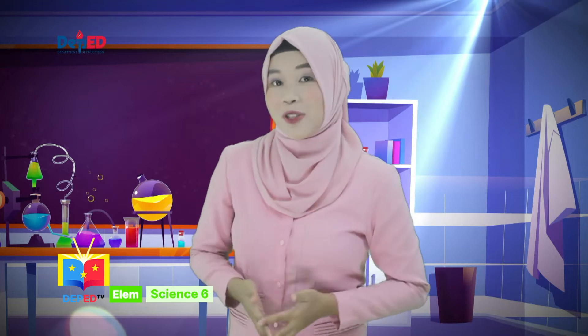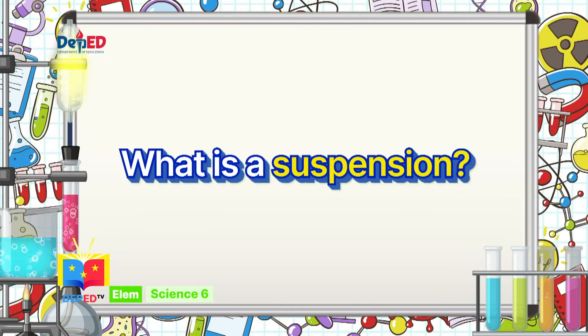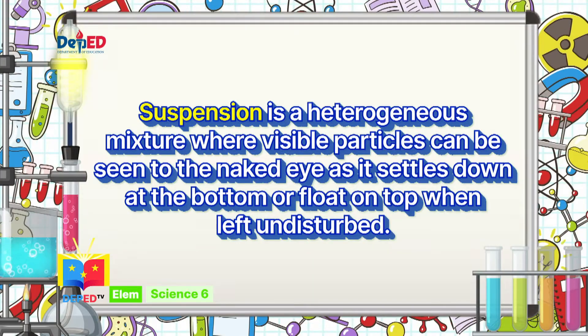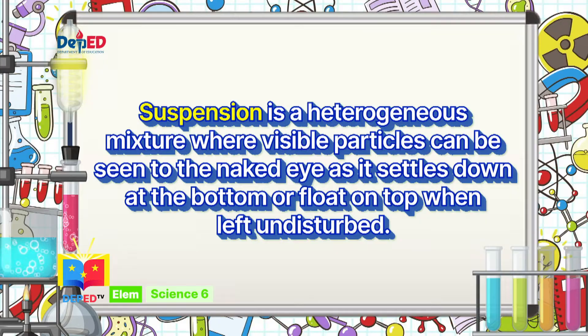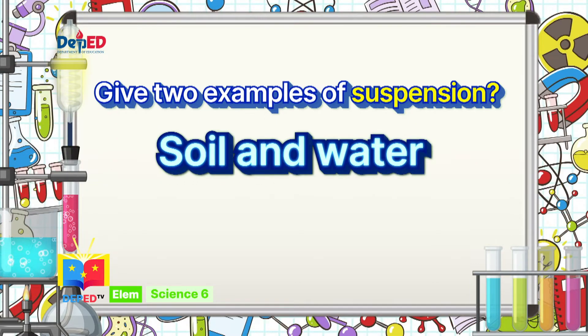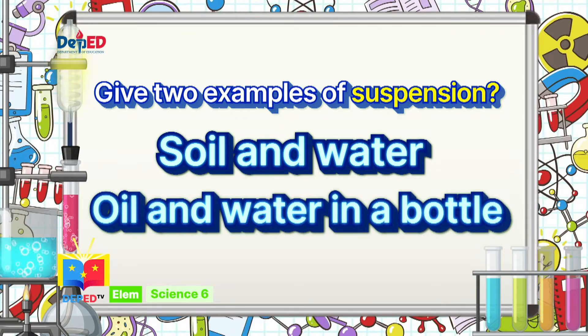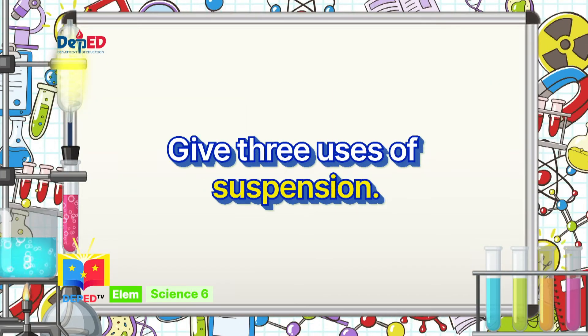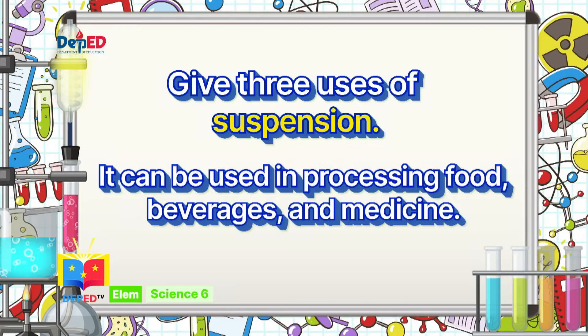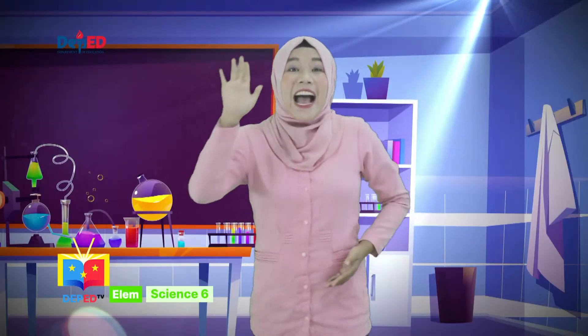From the information I gave about suspension, answer the following questions and write your answers on your paper. Suspension is a heterogeneous mixture where visible particles can be seen to the naked eye as it settles down at the bottom or floats on top when left undisturbed. Give two examples of suspension: soil and water in a clear glass, and oil and water in a bottle. Give three uses of suspension: it can be used in processing food, beverages, and medicine. Give me a high five, Science-minded Learners, for a job well done!